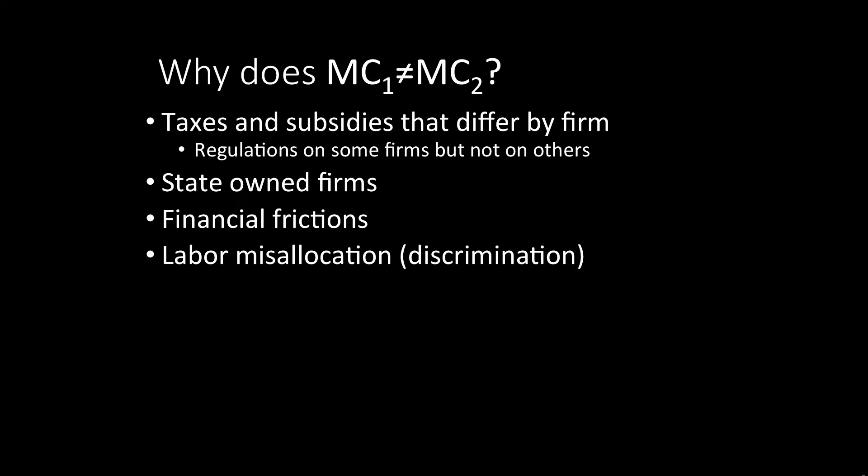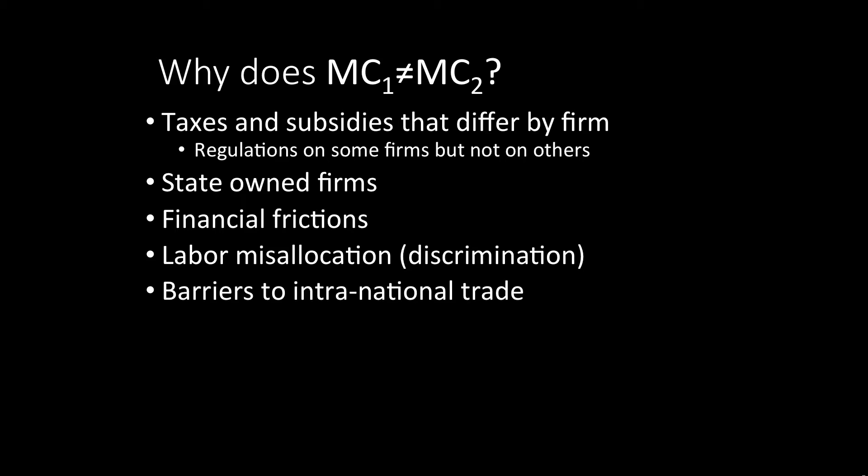Labor misallocation is another factor. Ideally, we would like the smartest people to be running the biggest firms, but often that doesn't happen. Think about the United States in the 1950s and 1960s — you had a lot of females and African Americans who were not allocated properly, not taking full use of all their skills because of discrimination. So discrimination reduced allocation and reduced output. Or think about India today: only now are Dalits, the untouchable class, being able to run firms — so you're getting better allocation over time. There are also barriers to intranational trade between states and provinces.